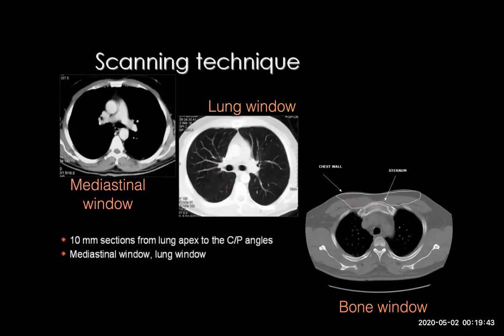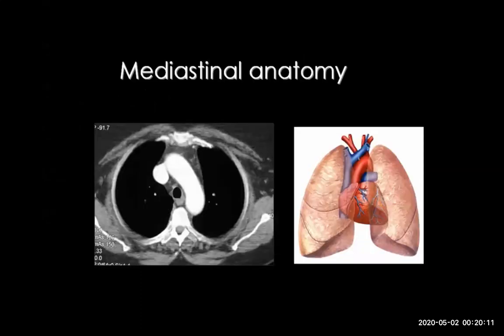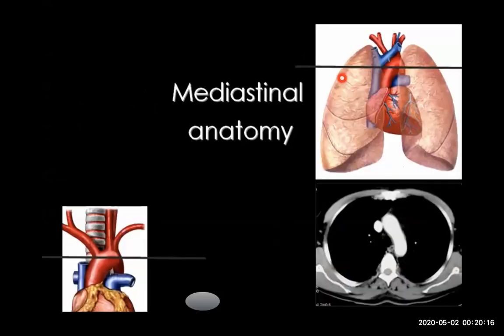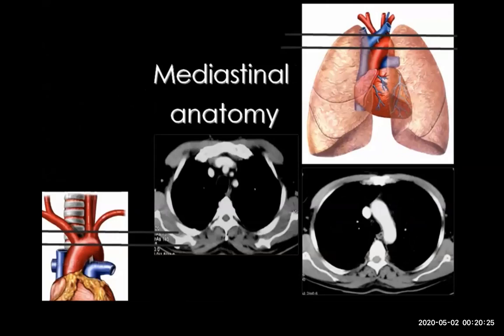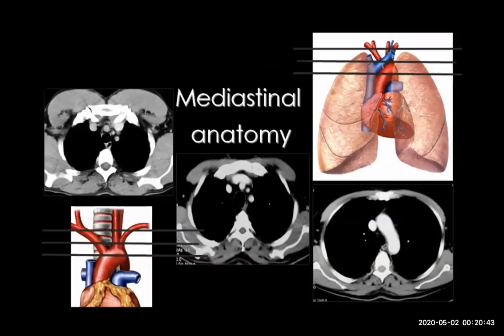These are three windows, but we can manipulate them according to the lung level and window width. In the mediastinal window, for example, scanning through the aortic arch gives this slice. Going above gives the branches of the aortic arch — the brachiocephalic artery, left common carotid artery, and left subclavian artery. Going further up gives more branching. By multiple slices, you get many images of the mediastinum from superior to inferior.